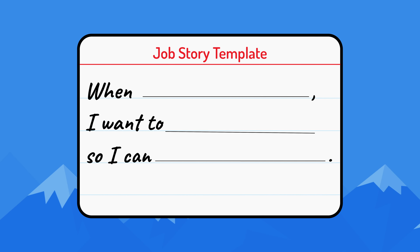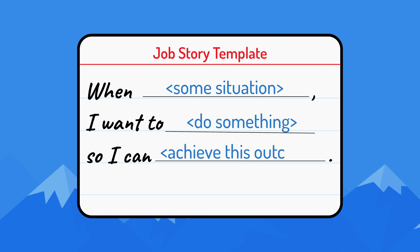Job stories de-emphasize who it is that's performing the action, which would traditionally be captured in a user story. This leads to a different template commonly in use for job stories. That template is: when some situation, I want to do something, so I can achieve this outcome. As with the common user story template, there are three parts to the job story template. The first is a trigger or situation, and that provides context on when the story is being performed or what action initiates the story.